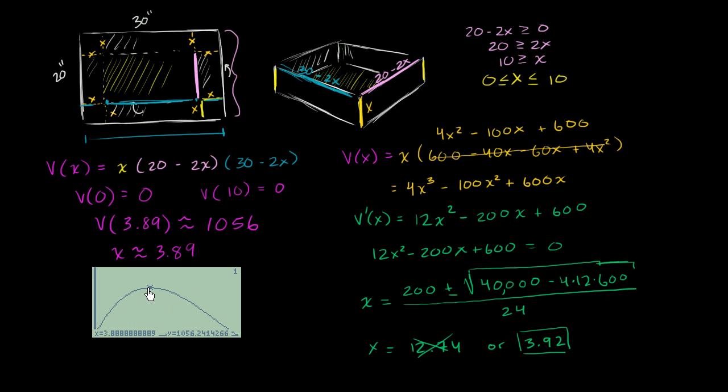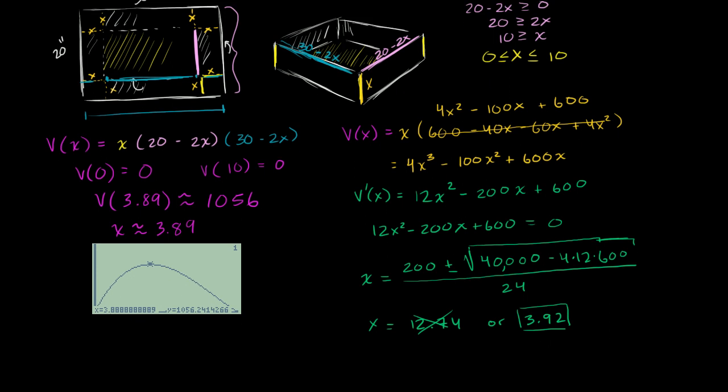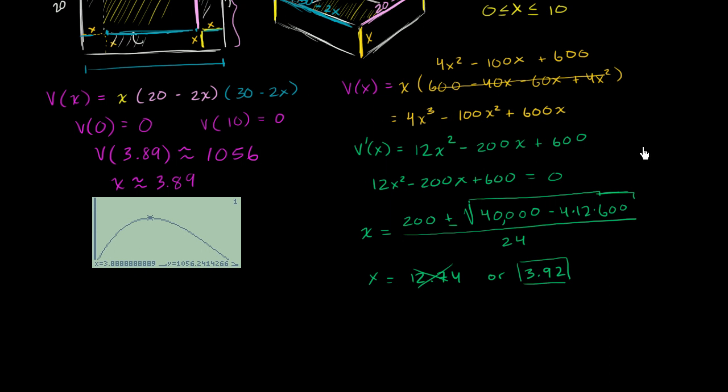And you could look at the graph and say, oh look, that looks like a maximum value. But if you didn't have the graph at your disposal, you can then do the second derivative test and say, are we concave upwards or concave downwards when x equals 3.92? Well, in order to do the second derivative test, you have to figure out what the second derivative is.